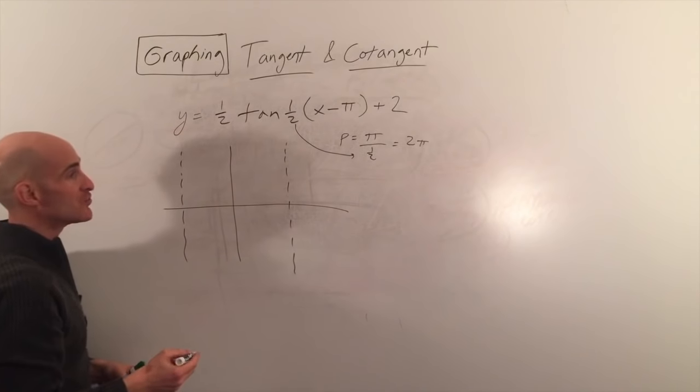That's cotangent. The key for both tangent and cotangent is to do the amplitude and period first, then apply the shift. Check out the sine and cosine graphs for additional pointers, and we'll cover secant and cosecant in the next video.